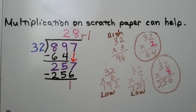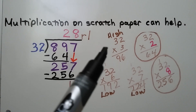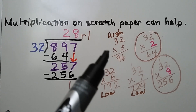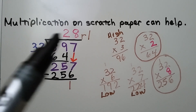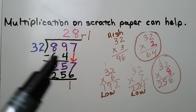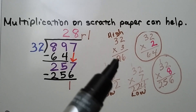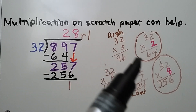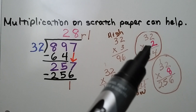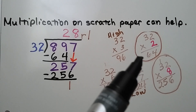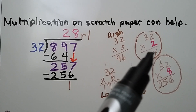Multiplication on scratch paper can help. We can try 32 times 3, and we get 96 tens — that's too high. So we adjust and multiply by 2, getting 64 tens. That was just right.